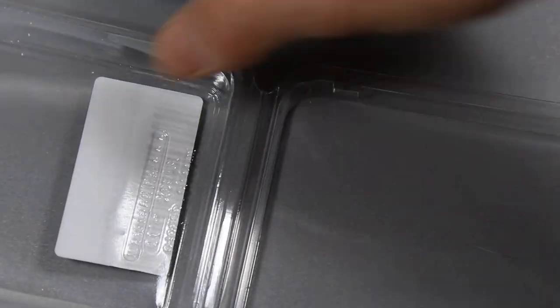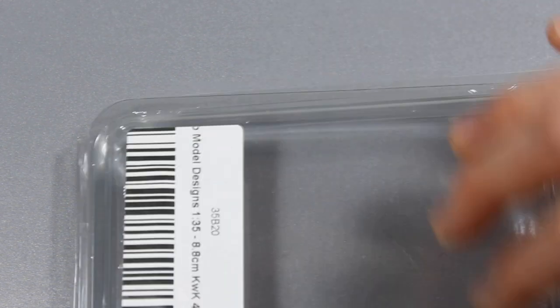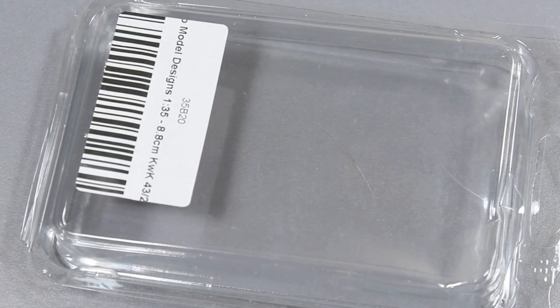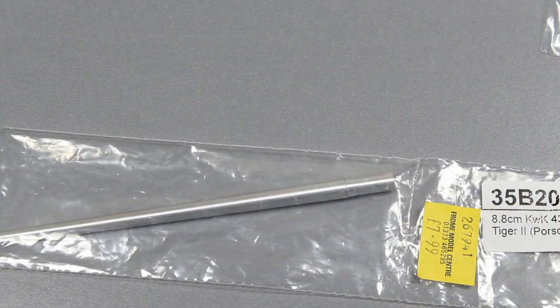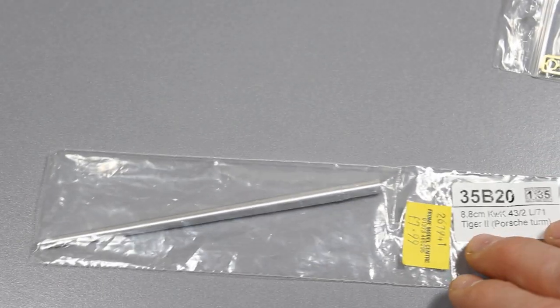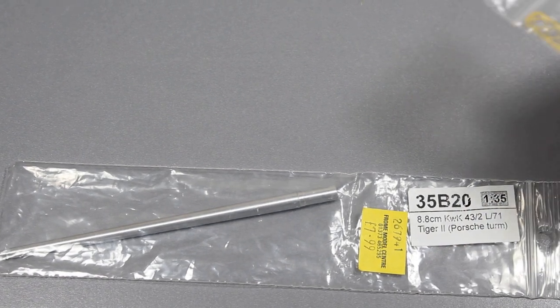As you can see we've got a package, and what it actually turns out to be is this plastic box here is the Studio Model Designs bit, and this seems to be the RB Productions metal barrel. So I'm not sure what's actually happening, but there's a bit of re-boxing or rebranding.